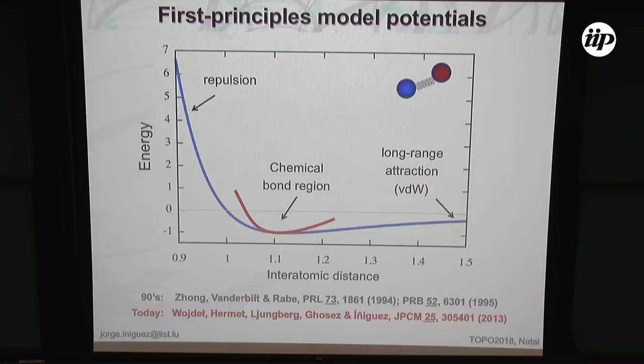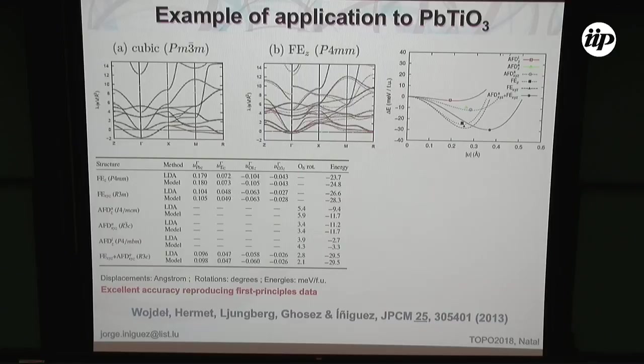That's what we are calling second principle simulations. For lead titanate, all model parameters are fitted to data obtained from first principles. If you look at energies of different polymers that are relevant — similar to phonon dispersion, these are essentially the eigenvalues of the force constant matrix, not a dynamical matrix — and other things, it works very well. So we have models that essentially give you the ab initio energetics.